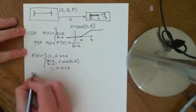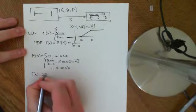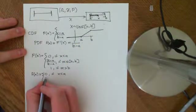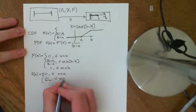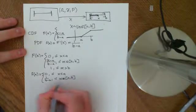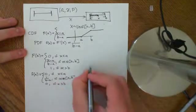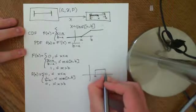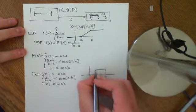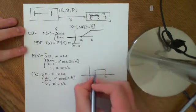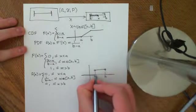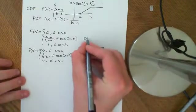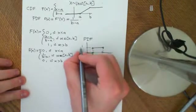Defining the PDF rigorously: f(x) = 0 if x < A; it's not defined at x = A and x = B; f(x) = 1/(B − A) if x ∈ (A, B); and f(x) = 0 if x > B. Plotting this, we get a constant value of 1/(B − A) between A and B, with open circles at A and B since it's not defined there, and 0 elsewhere.